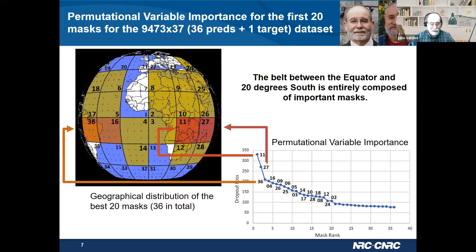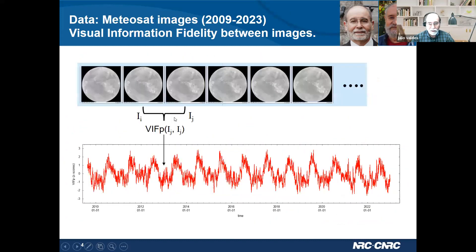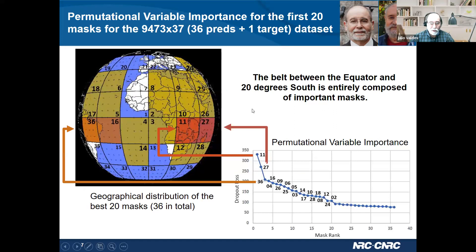We divided the hemisphere covered by these images — the Meteosat produces geostationary images, so they are seeing the same hemisphere all the time. The hemisphere was divided into tiles that are 20 degrees in latitude north and south, and they are numbered here. For each of these tiles, you can produce a VIF series considering only the part of the image covered by that tile or mask. When you integrate all the information from the different tiles and create a model, and investigate that model from the point of view of its internal behavior, we found the variation of permutational variable importance where each variable represents the behavior within one of these tiles.